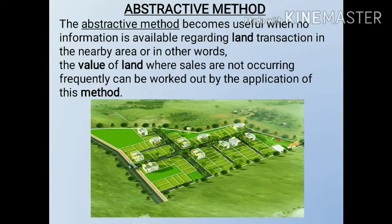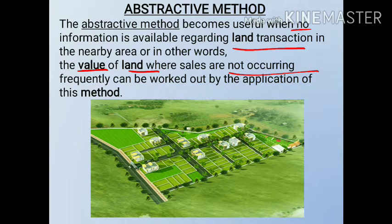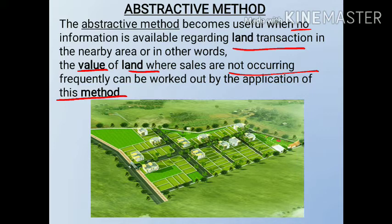What is the abstractive method? The abstractive method becomes useful when no information is available regarding land transactions in the nearby area. In other words, the value of land where sales are not occurring frequently can be worked out by the application of this method. So in simple words, we use the abstractive method when we don't have any information available about land transactions like buying and selling in nearby areas.